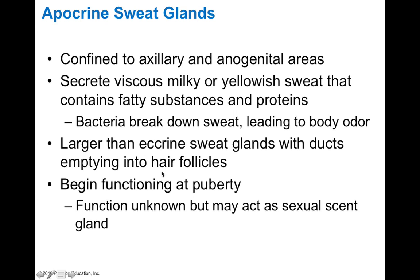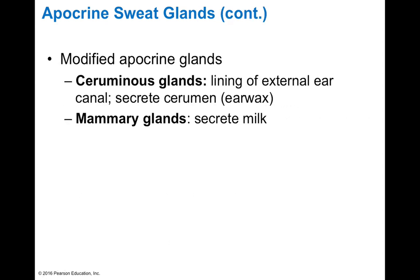Apocrine glands are not really involved with thermoregulation — they're most likely involved with sexual scent and pheromonal communication. There are also other modified sweat glands, such as ceruminous glands and mammary glands. Ceruminous glands line your external ear canal and secrete cerumen, which is earwax. Mammary glands are also a modified type of apocrine secretion and produce breast milk — fascinating varieties of apocrine glands found in different areas of the body.